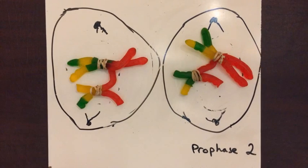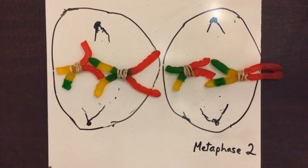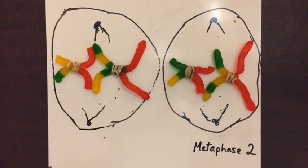This next phase is metaphase II. The chromosomes line up in the middle of the cell and the spindle fibers from the centrioles attach to the centromeres.